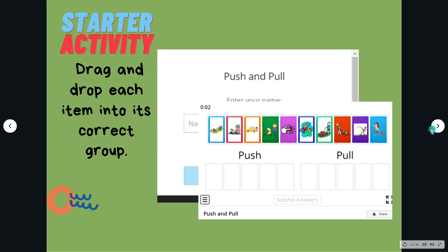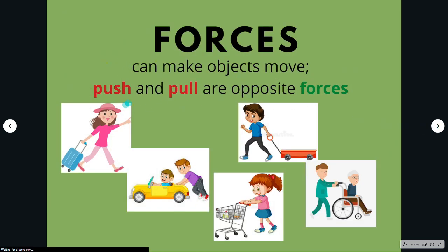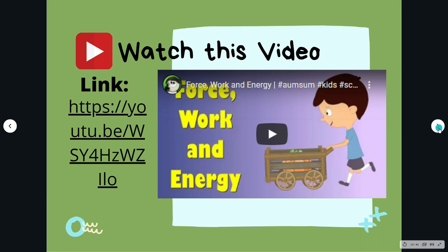Forces can make objects move. Push and pull are opposite forces. A pull is when you move an object towards you. A push is when you move an object away from you. Force is the push or pull applied on an object — it can move a stationary object or stop a moving object.